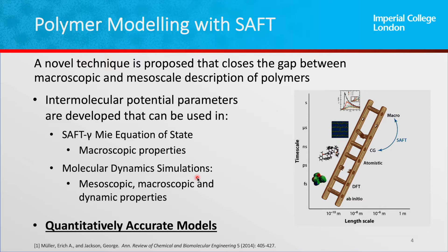In order to do this, we provide intermolecular potential parameters that we develop so that they can be used in two tools simultaneously. The first tool is an equation of states called SAFT-Gamma-Mie, where the intermolecular potentials are used to predict macroscopic description of the system. On the other hand, we go the opposite way: we use intermolecular potential parameters developed using macroscopic experimental data to provide molecular simulation insight at the mesoscale. By going both ways — from macroscale to mesoscale and from mesoscale to macroscale — we come up with a quantitatively accurate molecular model.